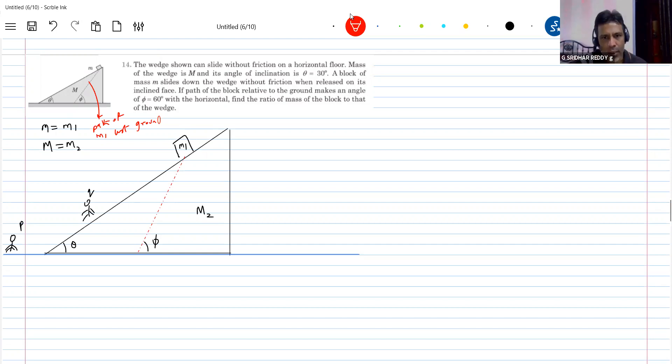With the path of block related to ground angle phi, so that's what I'm indicating here. So person P comments the wedge will move horizontally in what direction. According to this, it should move towards - the wedge will move towards right and the block M1 will move along the red color path. Therefore, in what direction I should show the acceleration of block M1 somewhere like this.